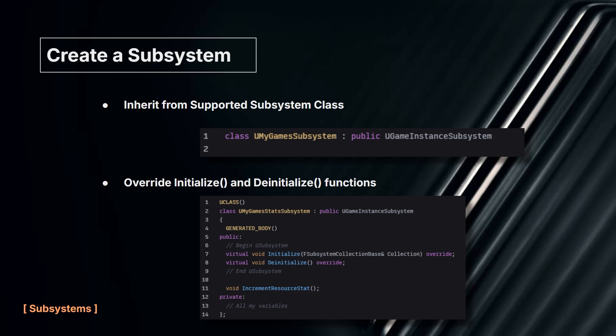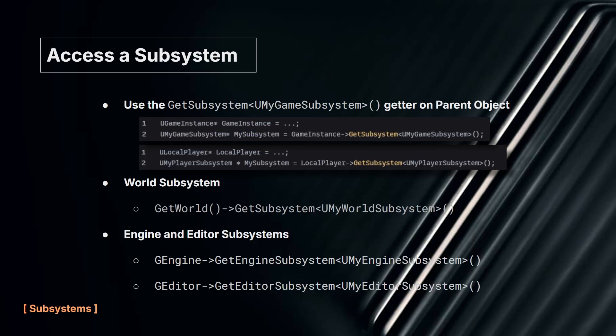Once you've created your subsystem and need to access it, Unreal has GetSubsystem functions built into the parent objects. You can see that the Game Instance has GetSubsystem, Local Player has GetSubsystem, and GetWorld has GetSubsystem. The Engine and Editor subsystems have their own GetEngine and GetEditorSubsystem functions. You need a reference to those parent objects — GetWorld is straightforward, and for Game Instance there's GetGameInstance. For Local Player you can easily do that through your player controller.